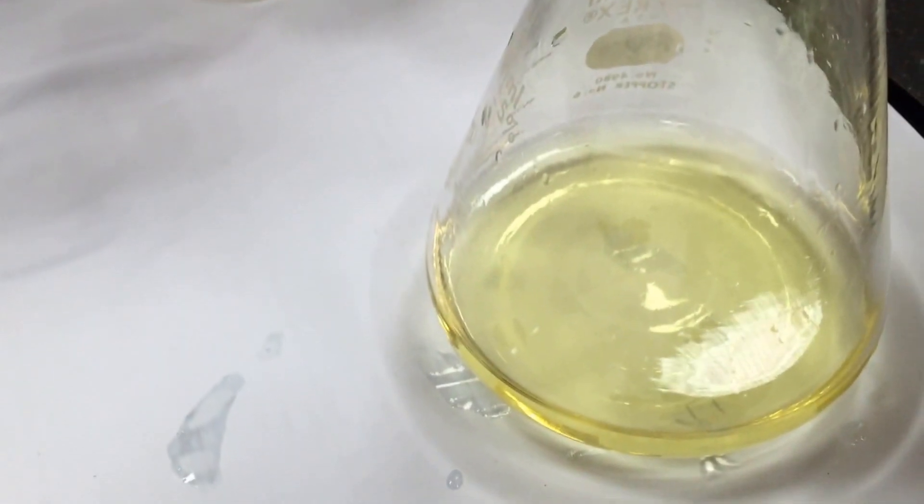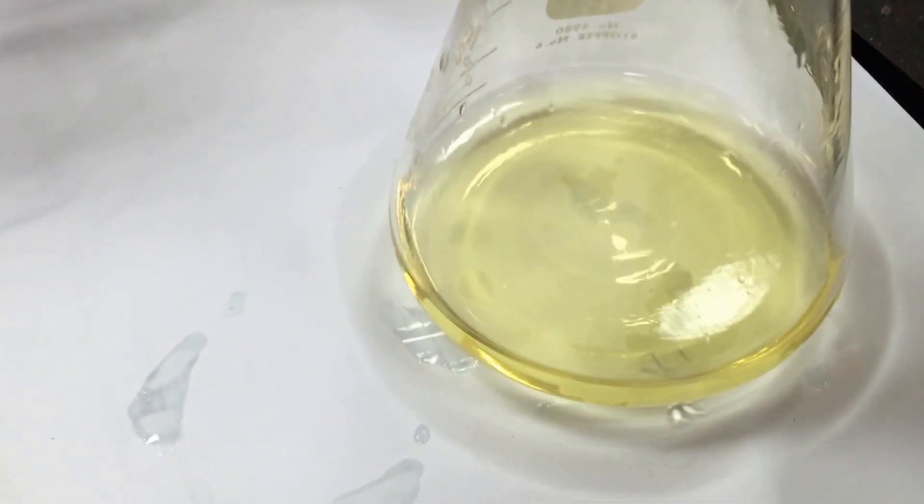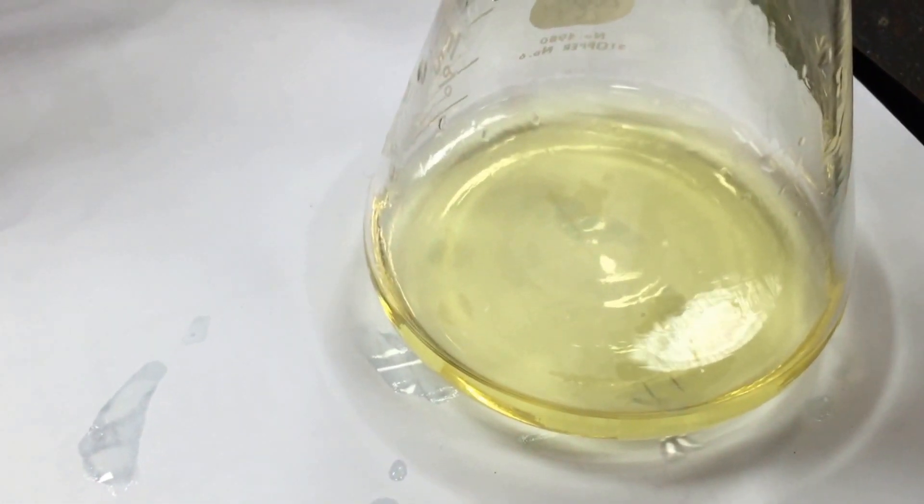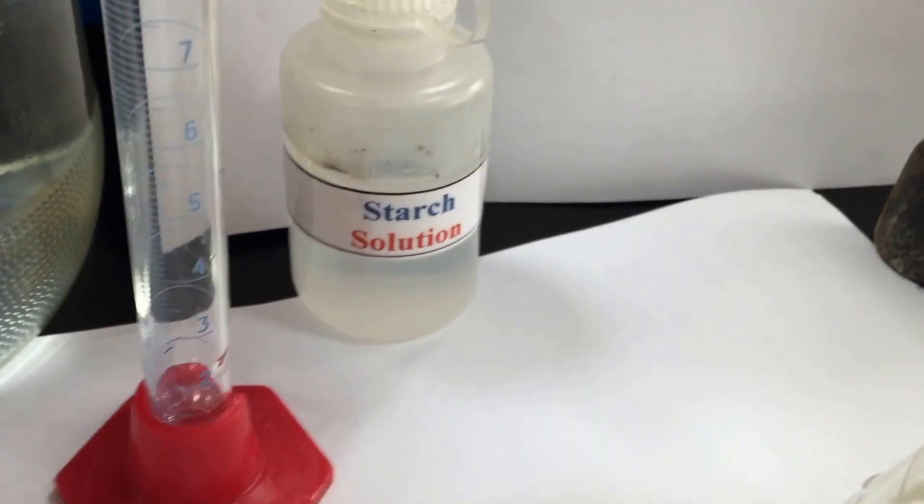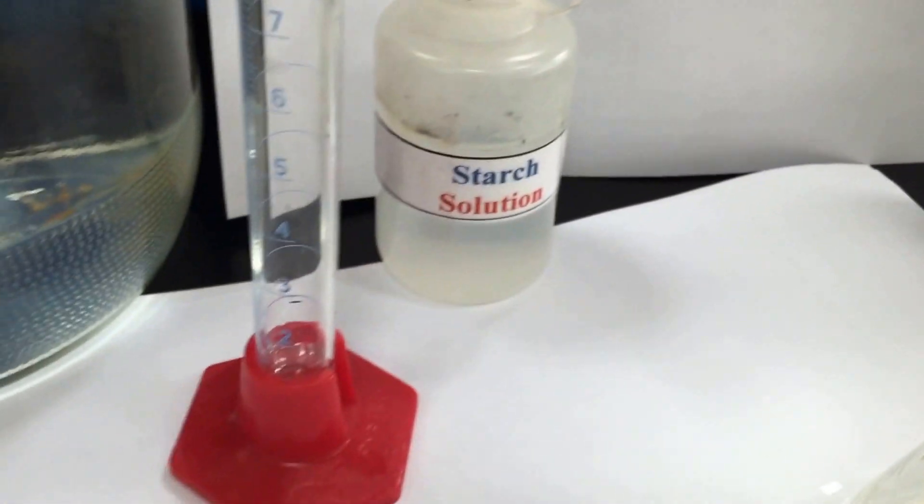So we're going to wait. We're going to first titrate most of the way until this becomes mostly colorless. Then we will add the starch solution, which I've already measured out. It's just about one milliliter or so, approximately.